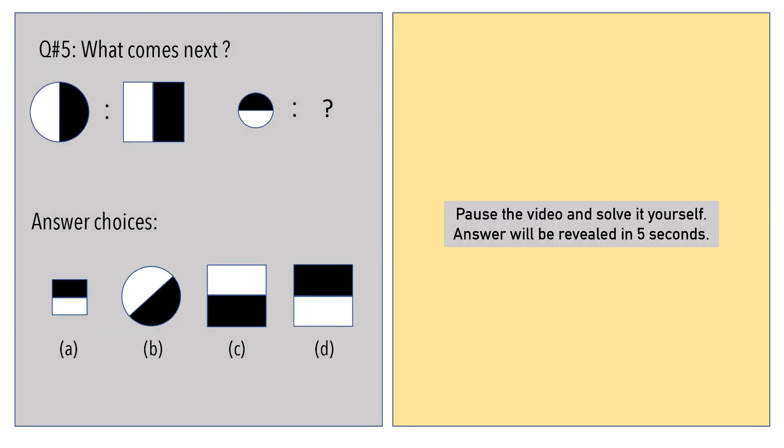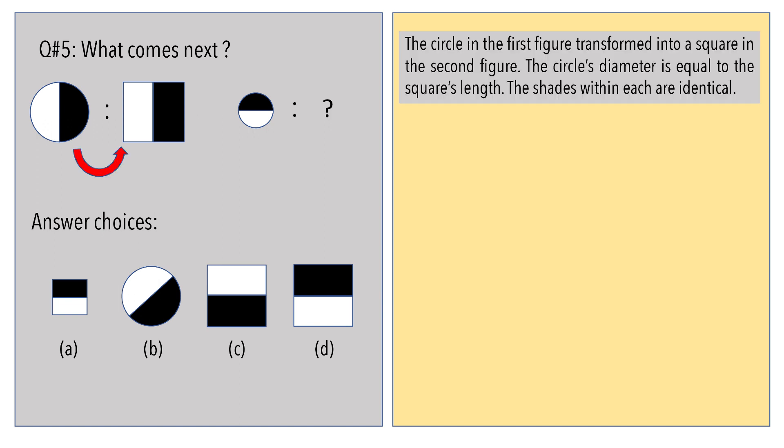Last question. What comes next? Again, pause if you'd like. The circle in the first figure transformed into a square in the second figure. The circle's diameter is equal to the square's length. In other words, the two shapes are similar in size. The shades within them are identical.